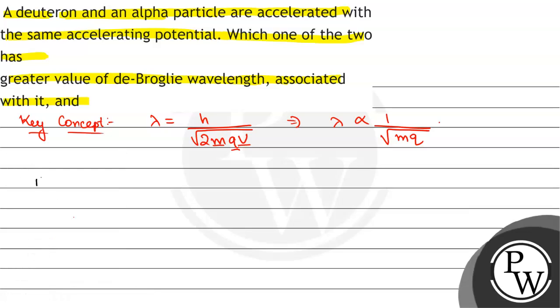Now, we will see that lambda deuteron is equal to root under m. Mass of deuteron is twice mass of electron and charge of deuteron is equal to charge of electron.